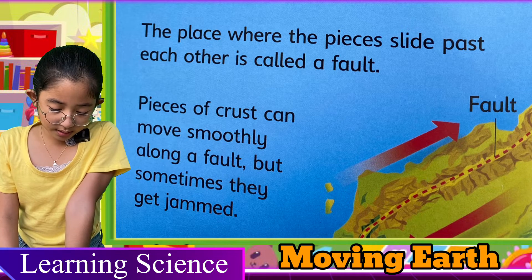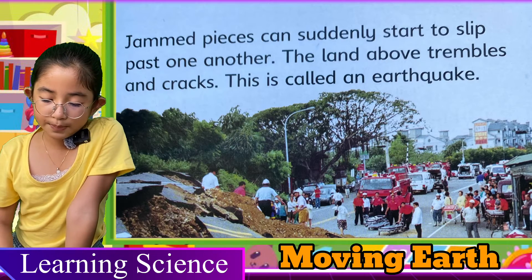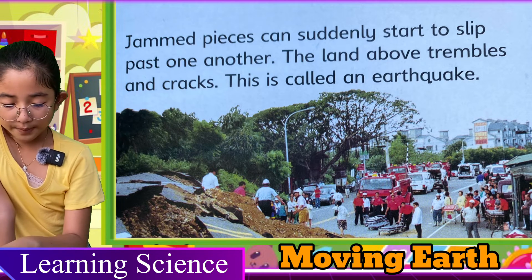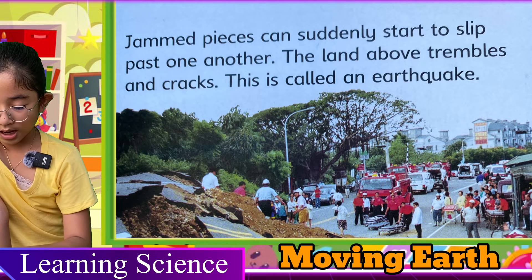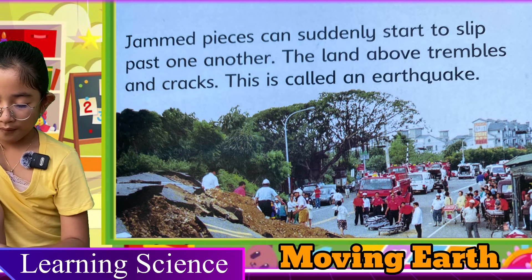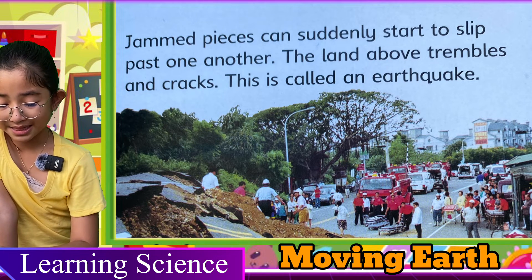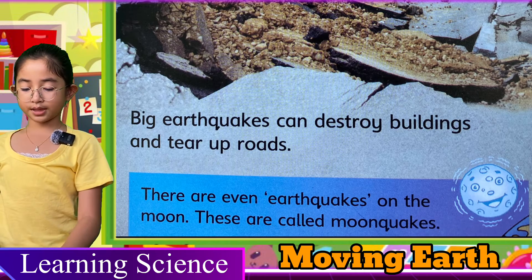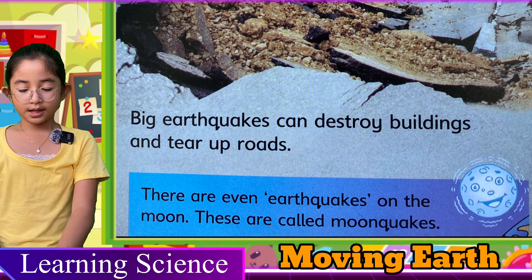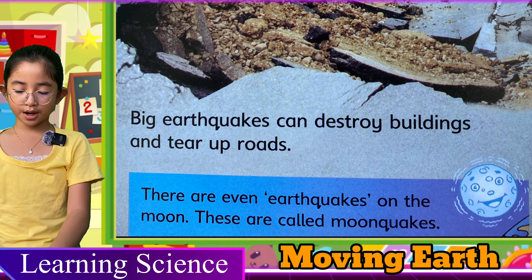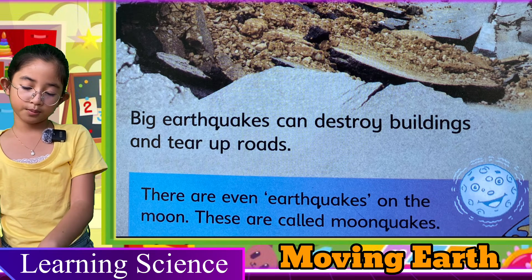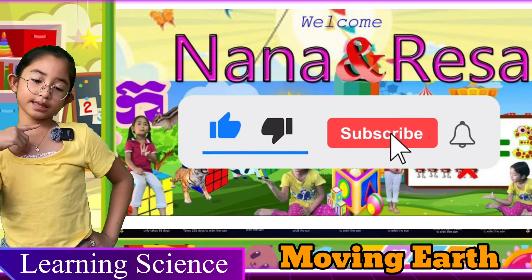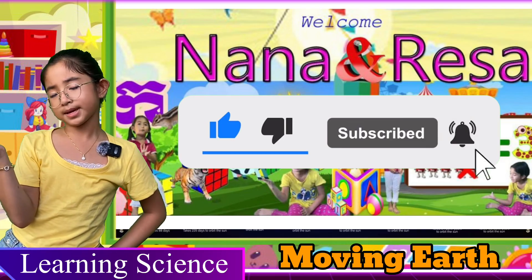Sometimes they get jammed. Pieces can suddenly start to slip past one another — the land jolts and cracks. This is called an earthquake. Big earthquakes can destroy buildings and tear up roads. There are even earthquakes on the moon — these are called moonquakes. Thank you guys for watching this video. Don't forget to like and subscribe, and give this video a big thumbs up!